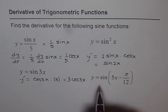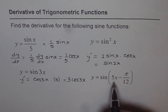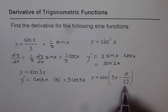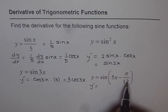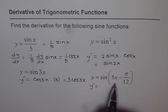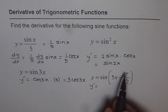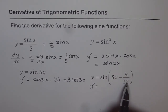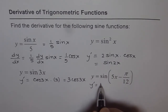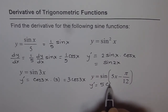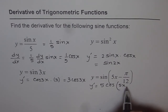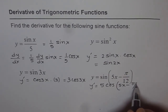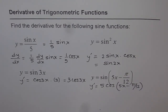The next one is y equals sine of 5x minus pi by 12. So y-dash equals cosine of that angle, times the derivative of the inside function. The derivative of the inside function is just 5, since it's a constant. So we get 5 times cos of 5x minus pi by 12. That is how you find derivatives of the sine function.